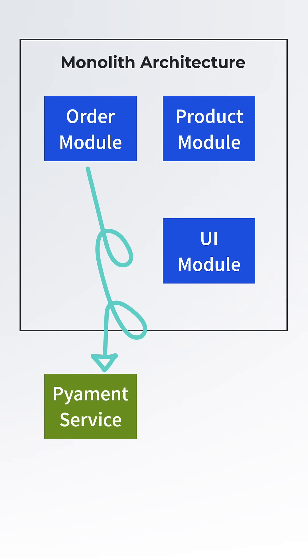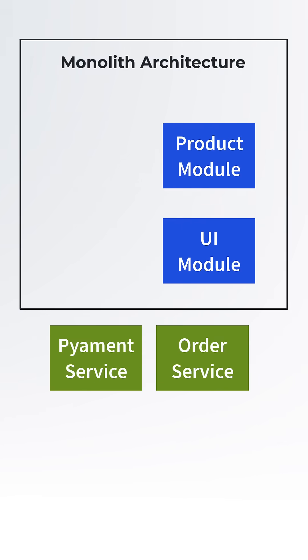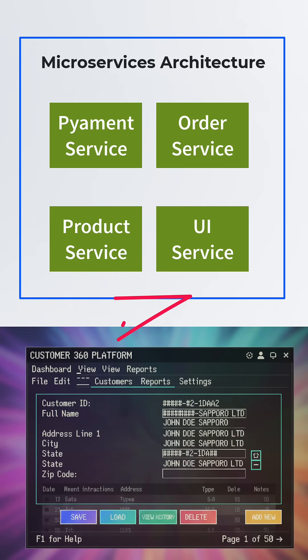Once you're done with that, you take down the old payment module in the monolith application and route all requests to your newly developed payment service. You keep repeating this — extracting different modules from the monolith, building new services around it, routing requests to those new services, and then taking down the old components.